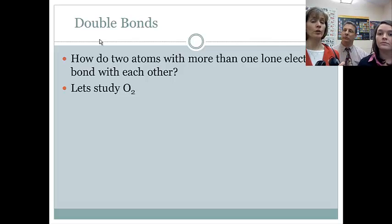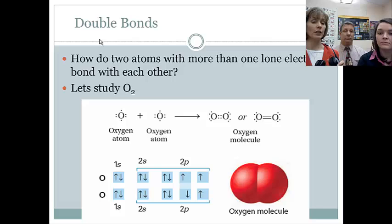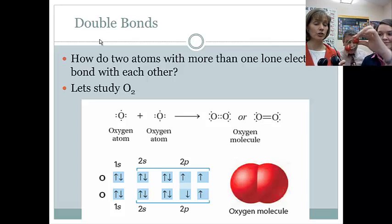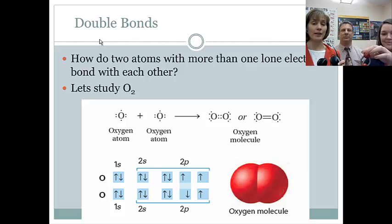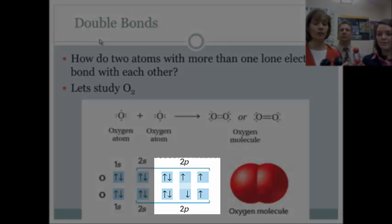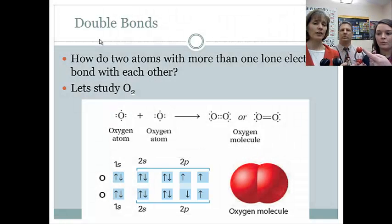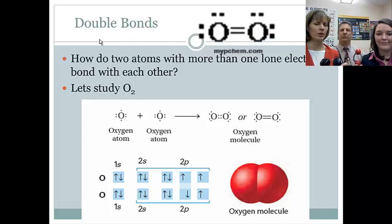How do two atoms with more than one lone electron bond with each other? Looking at oxygen, we've got a model of oxygen somewhere around here. Oxygen has two unshared pairs and then two lone electrons. And that's a perfect case where not just one orbital from each atom can overlap, but actually two of them can overlap. We're going to end up here with a double bond. You'll see our electron dot structure shows a lot of dots there in the middle, and it might look a little bit confusing. But when we change those shared pairs of electrons from dots to dashes to show that they really are being shared, it's obvious that a double bond has formed there.